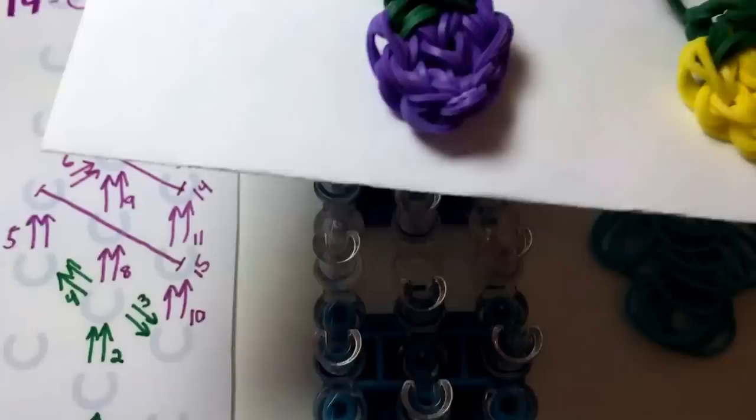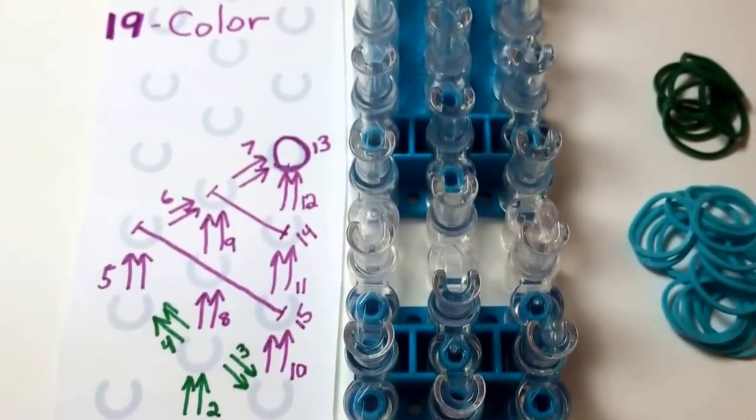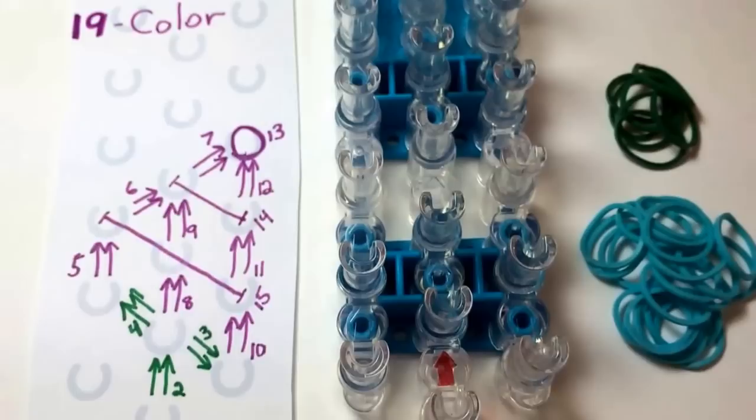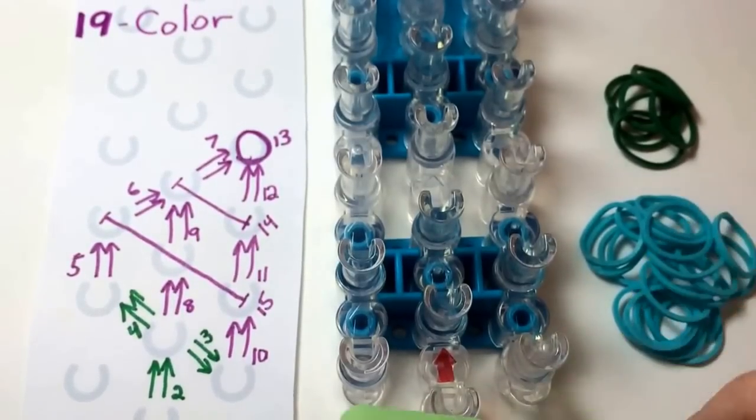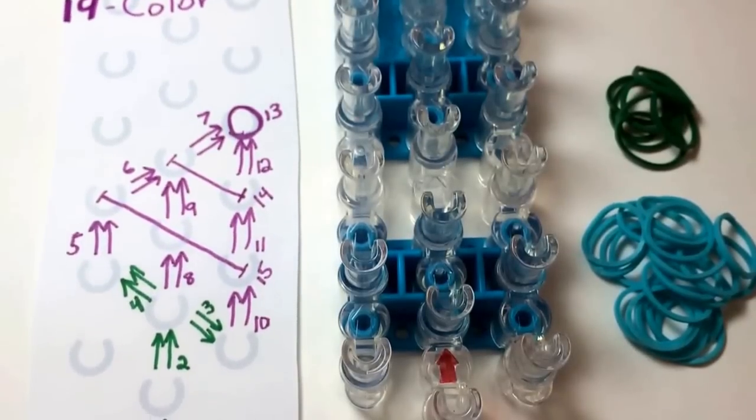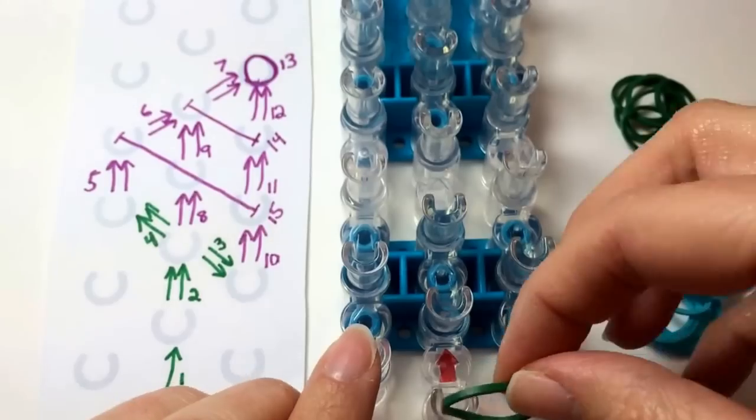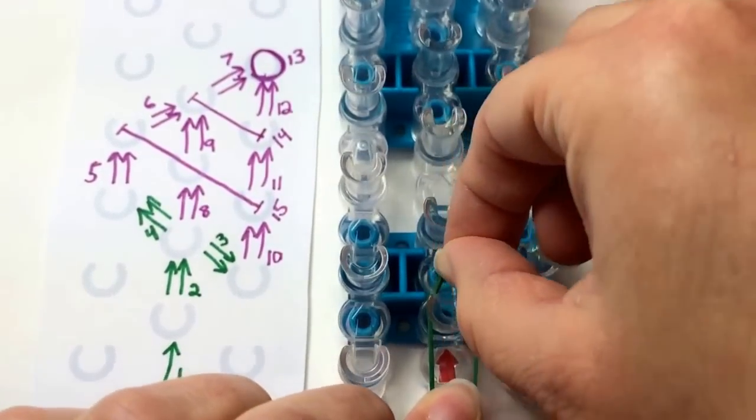Let's get started. To set up the rubber bands on the loom, first make sure that your loom is set up as mine is in the staggered configuration. And to begin with, we're going to place a single green rubber band going forward.